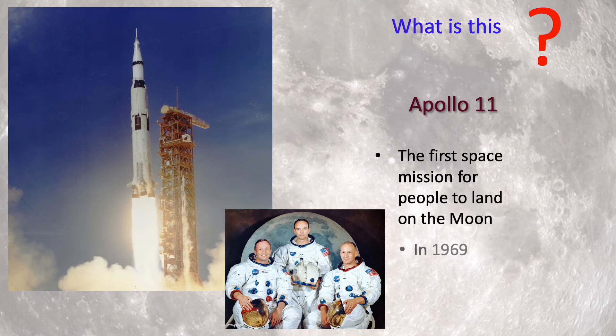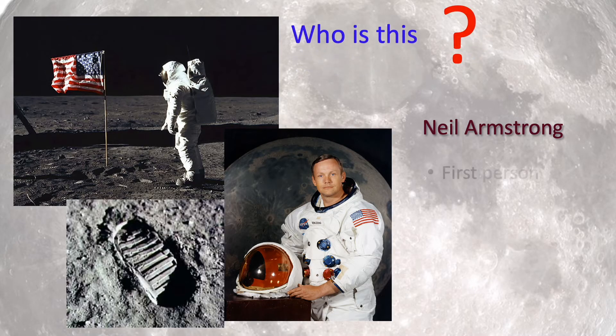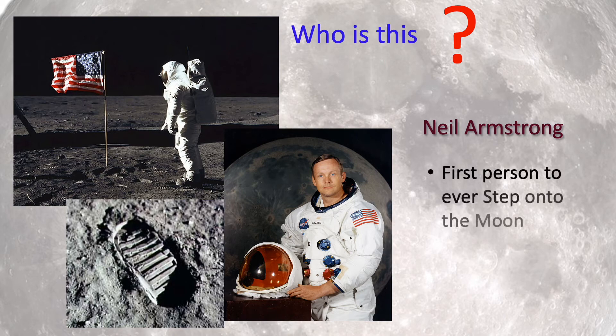The United States NASA Apollo program achieved the first human lunar orbit with Apollo 8 in 1968. Apollo 11 was the first space mission for people to land on the moon, in 1969. Neil Armstrong and Buzz Aldrin landed in the moon's Sea of Tranquility on July 20th, 1969.